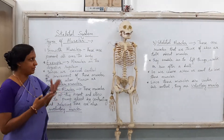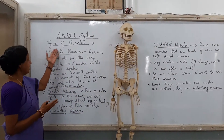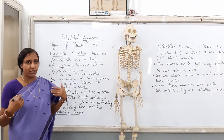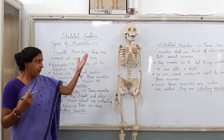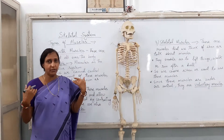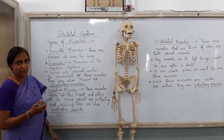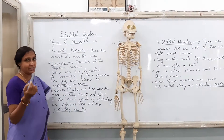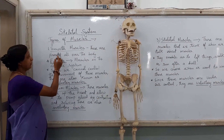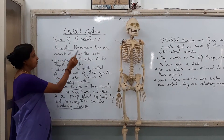Children, moving further with the skeletal system, we are coming to the types of muscles. As you know, your whole body from internal area is like this, but over the bones you have muscles. So let's go through the types of muscles we have in our body. First, the type of muscles we have is smooth muscles.